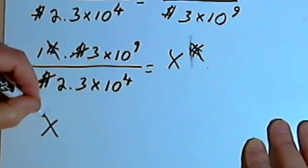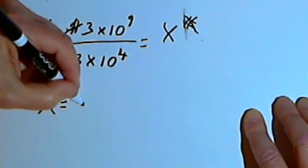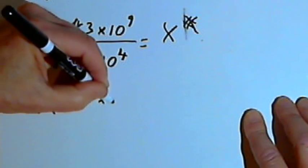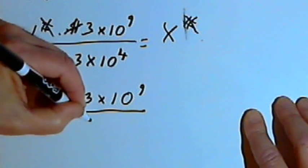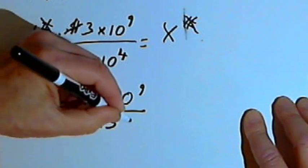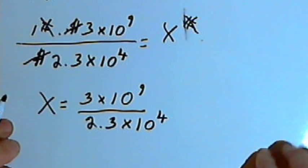So I'll cancel out my pound signs. And now what I've got, I'm just going to rewrite this, is the x all by itself. And x equals 3 times 10 to the ninth, over 2.3 times 10 to the fourth. I've gotten rid of all my units.